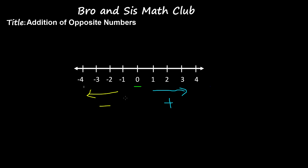Now let me show you an example of opposites. Here on the number line, we see the number negative 3. The number negative 3 is 3 units from 0 to the left. And the opposite of negative 3 would be 3, because 3 is also 3 units from 0, but to the right. So the opposite of negative 3 is 3.